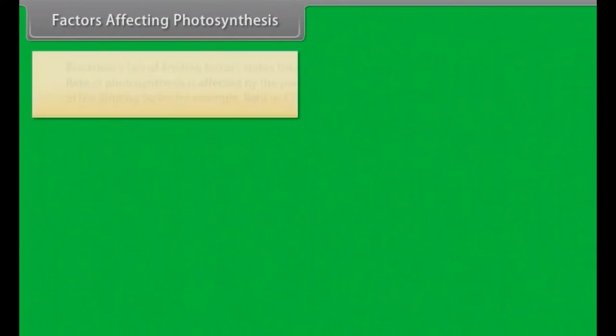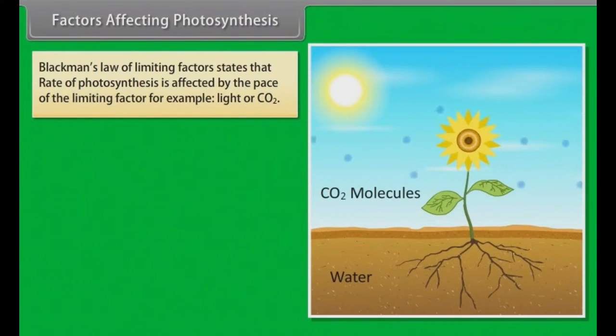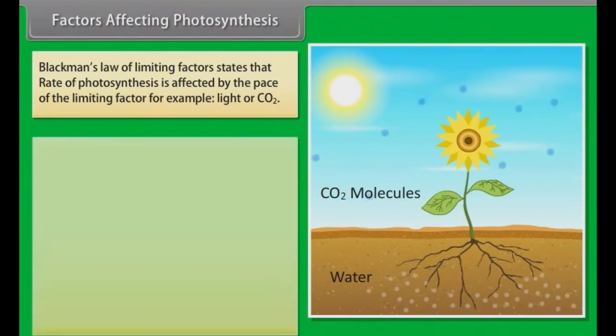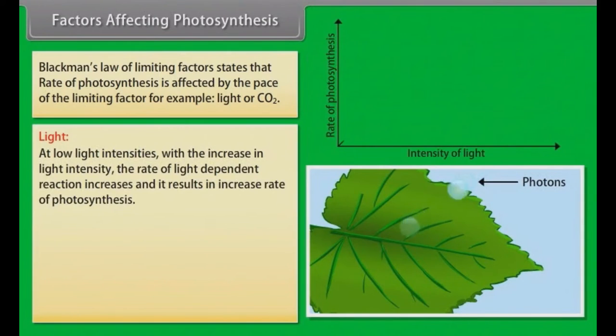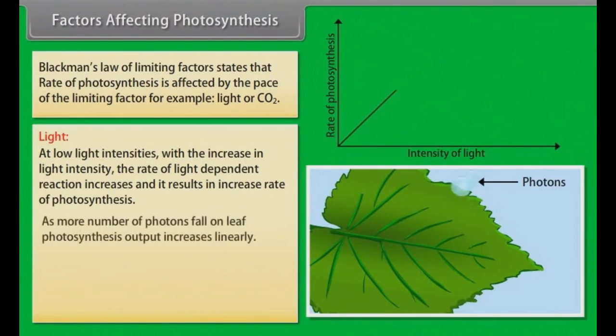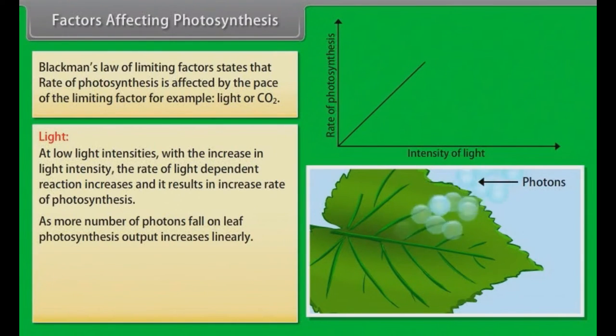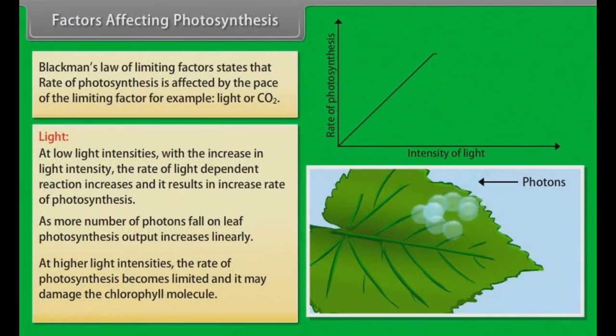Factors Affecting Photosynthesis: Blackman's Law of Limiting Factor states that rate of photosynthesis is affected by the pace of limiting factor, for example, light or CO2. Light: At low light intensities, with the increase in light intensity, the rate of light-dependent reaction increases and it results in increased rate of photosynthesis. As more number of photons fall on leaf, photosynthesis output increases linearly. At higher light intensities, the rate of photosynthesis becomes limited and it may damage the chlorophyll molecule.